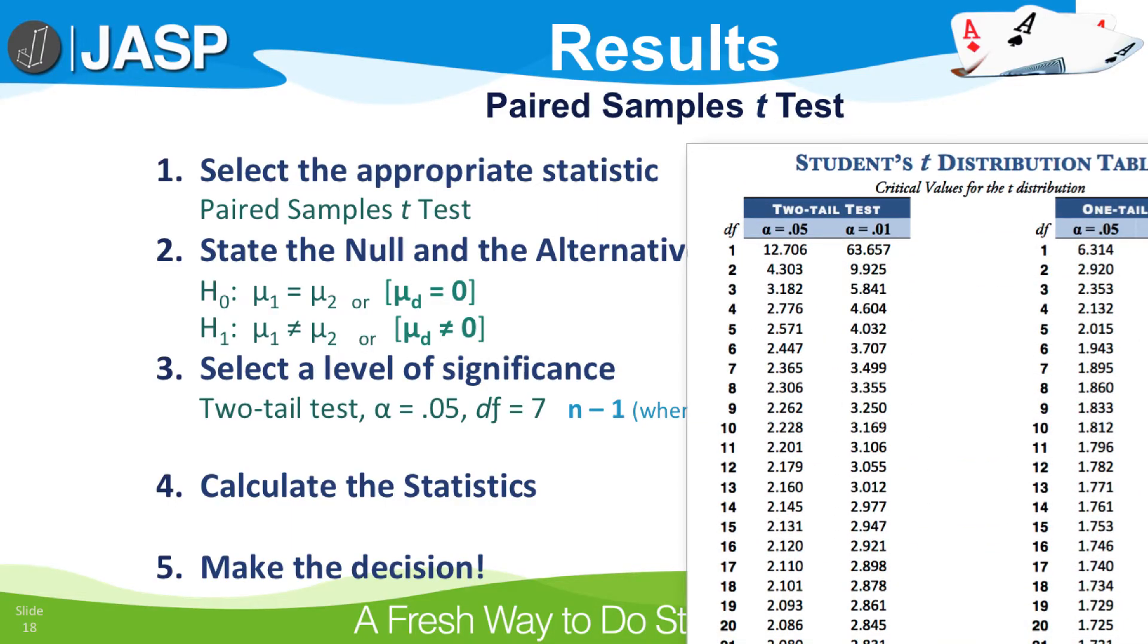From student's t-table, the critical value for a two-tailed test, alpha 0.05 degrees of freedom equals 7, is positive or negative 2.365. So any t-values exceeding 2.365 indicate that the sample of puppies being trained with clicker training was statistically significantly different than the puppies being trained with food reward training.